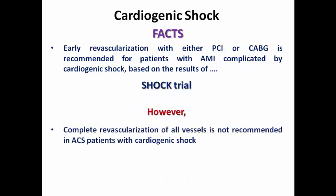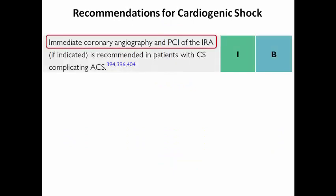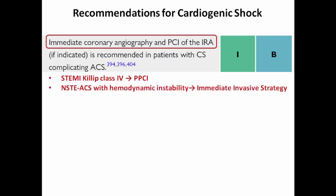However, complete revascularization of all vessels is not recommended in ACS patients with cardiogenic shock, as it increases morbidity and mortality due to using a higher amount of contrast. The current recommendation is to treat only the culprit vessel. Immediate coronary angiography and PCI of the infarct-related artery is recommended in patients with cardiogenic shock complicating ACS — such as STEMI Killip class IV needing primary PCI, or non-ST elevation ACS with hemodynamic instability needing an immediate invasive strategy within two hours.